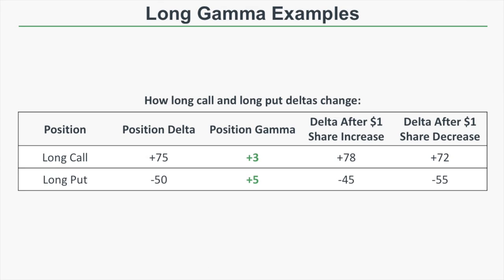Let's start with long gamma examples. Long options have long gamma positions. Let's look at a long call position — say a long call has a position delta of plus 75 and a position gamma of plus 3. That means if the stock price rises by one dollar, the new position delta is expected to be plus 78. If the stock price decreases by one dollar, the long call's position delta is expected to decrease by three, to plus 72.